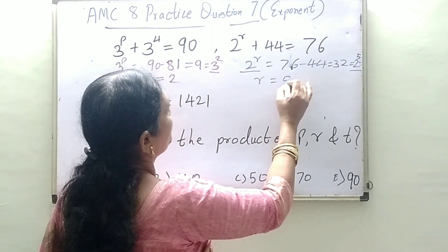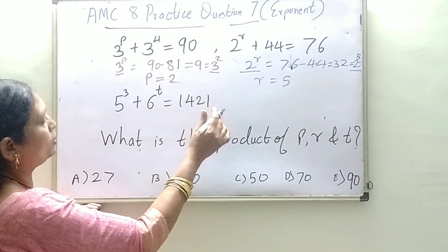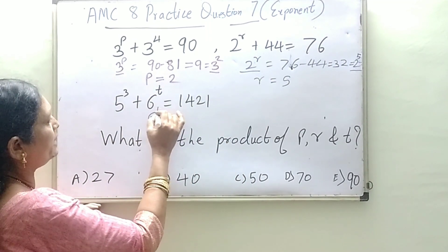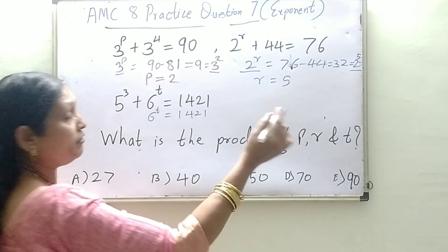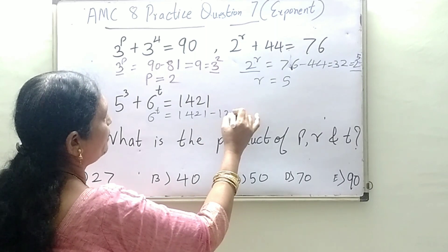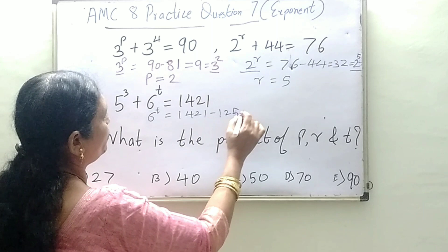Now 5 cube plus 6 raise to t is equal to 1421, so 6 raise to t is equal to 1421 minus 5 cube. 5 cube is 125, so 1421 minus 125 you get 1296.